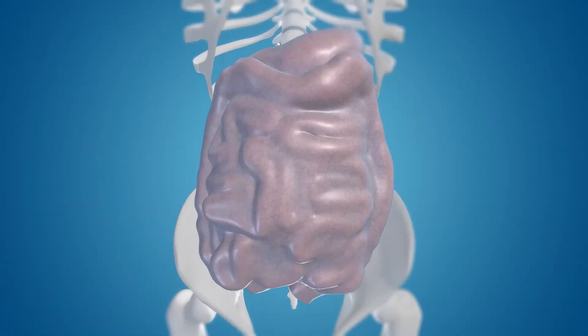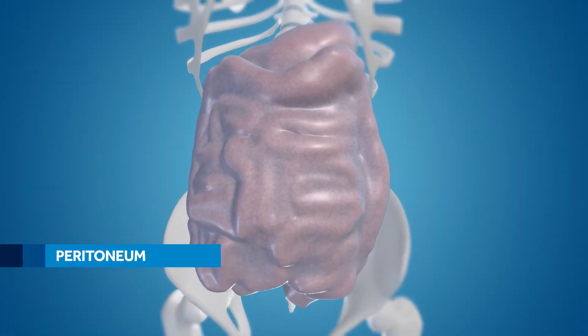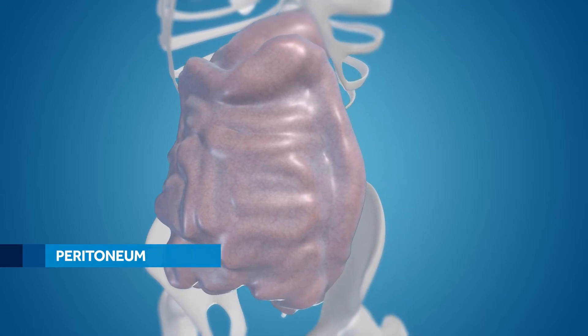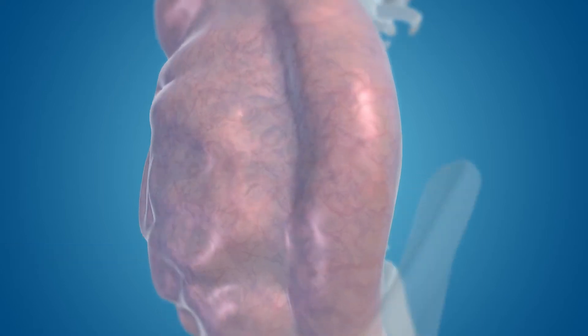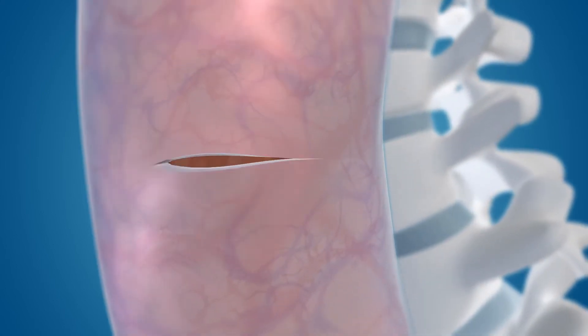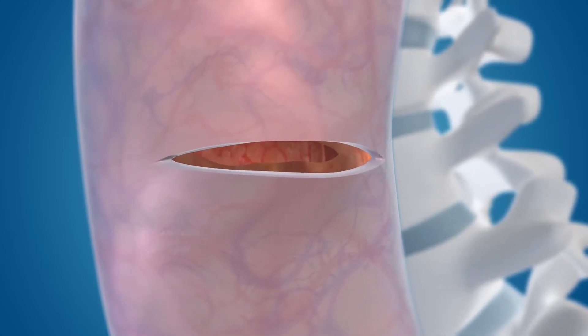Let's start with the peritoneum, a thin membrane lining the abdominal cavity containing the intestines. Anatomical concerns with the peritoneum are tearing the membrane or perforating the bowel or intra-abdominal contents.